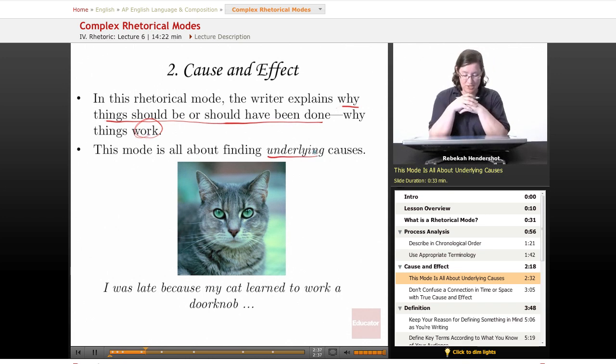The example we have here is: I was late to school because my cat learned how to work a doorknob. My cat got out and I chased it all over the neighborhood. My cat climbed a tree and I climbed the tree to get the cat. I fell out of the tree and broke my arm, and I had to go to the emergency room, and that's why I'm not showing up at school until lunchtime. So, cause and effect. Why are you showing up at school at lunchtime with your arm in a cast? My cat learned to work a doorknob.